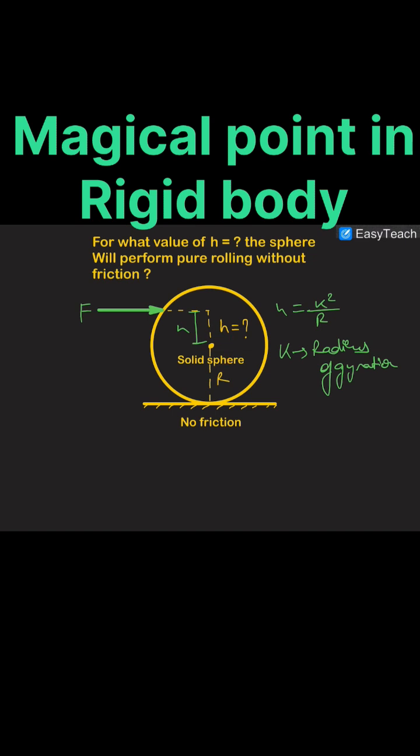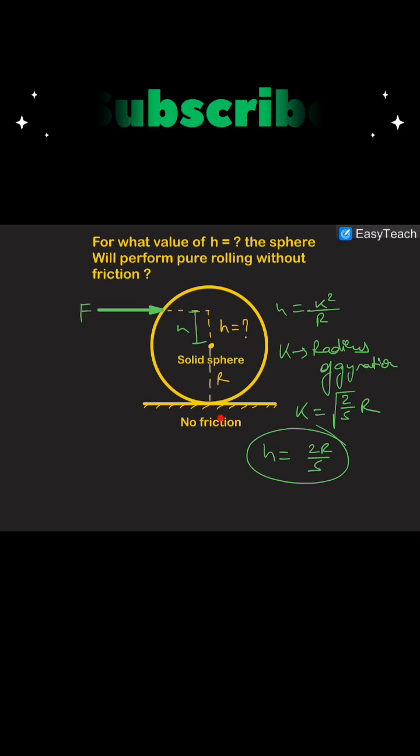Now in this case, solid sphere has k as under root 2 by 5 r, therefore h for this solid sphere will be 2r by 5. And this height is the height where we should apply the force above the center so that this sphere rolls without friction, which means that if there is a frictionless surface it will roll, and if there is a rough surface it will roll without any friction acting on it. So let's do it.